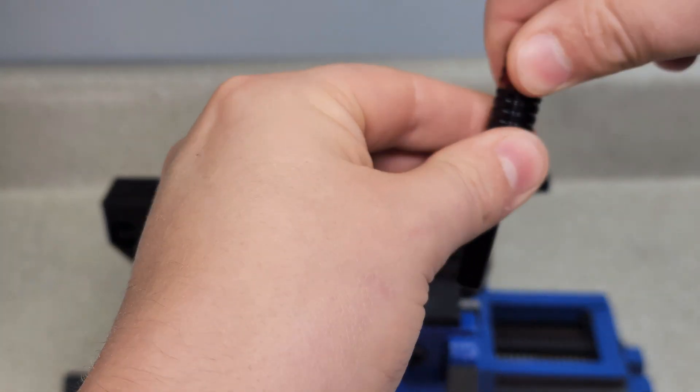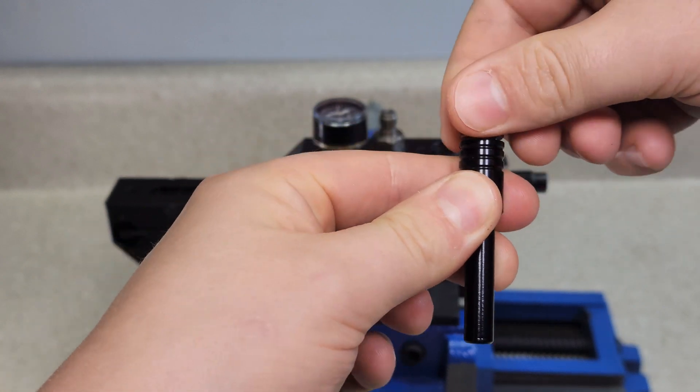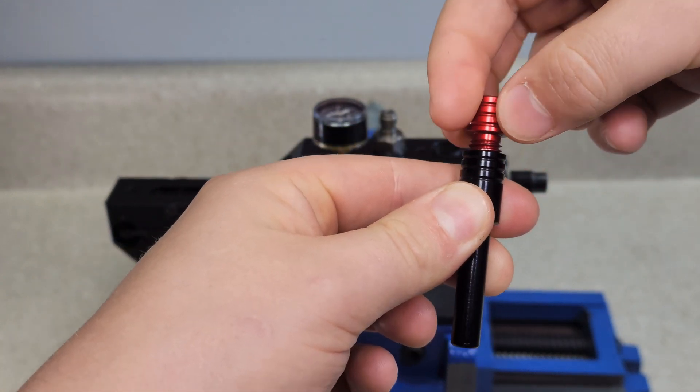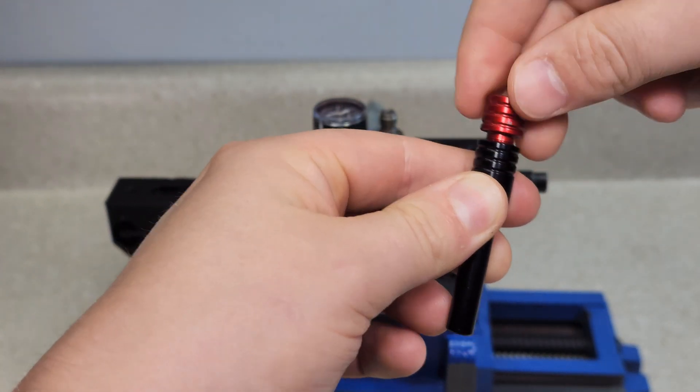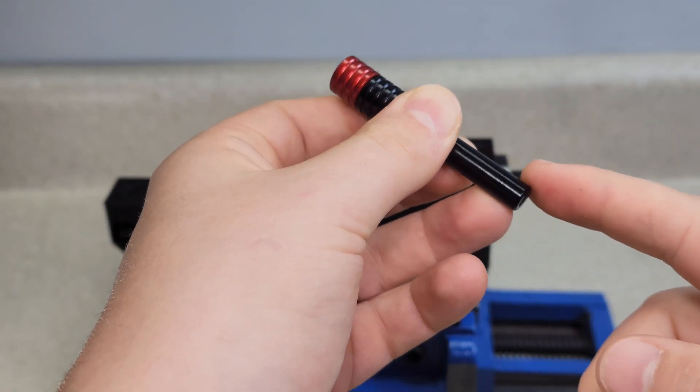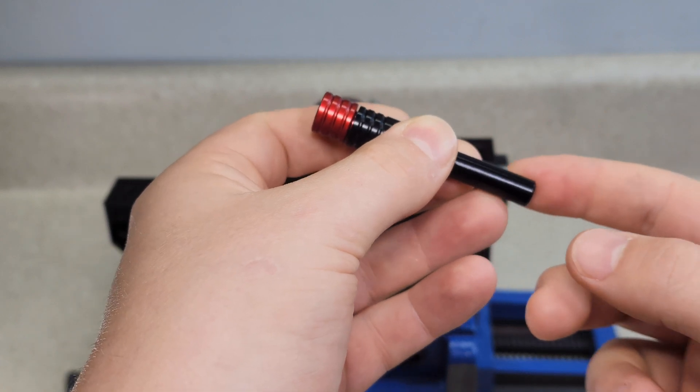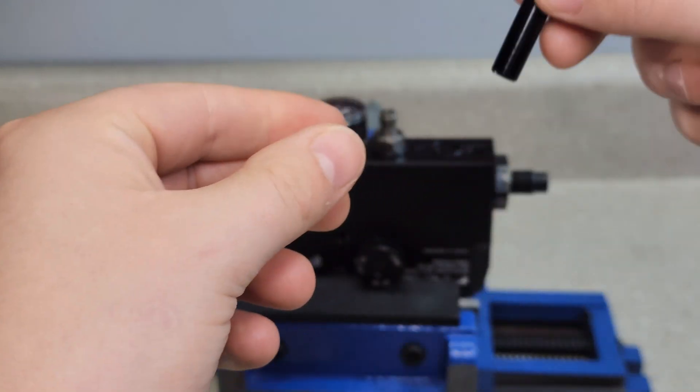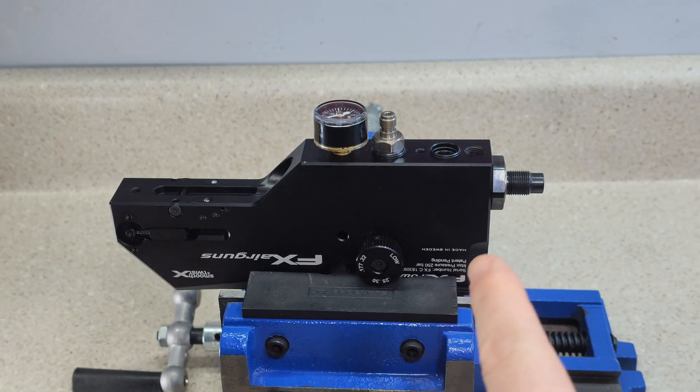You tighten this down. This is a threaded portion here, see those threads. You keep this together as one piece, you thread this down and there's o-rings in here that cause tension onto the regulator piston. It grabs it and pulls it out. I'm gonna do a quick demonstration for you.